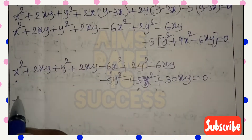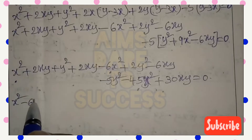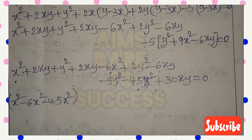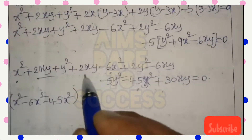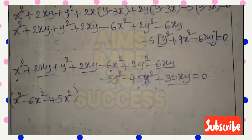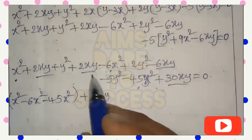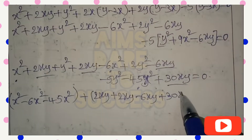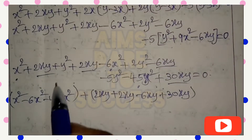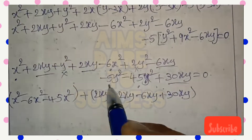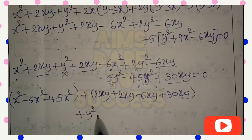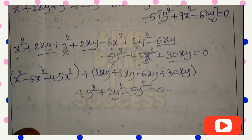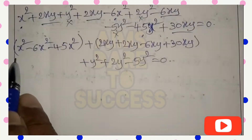Combining x² terms: 1 - 6 - 45 = -50, so -50x². Combining xy terms: 2 + 2 - 6 + 30 = 28, so 28xy. Combining y² terms: 1 + 2 - 5 = -2, so -2y². The equation becomes: -50x² + 28xy - 2y² = 0.